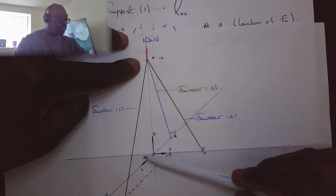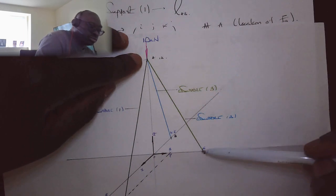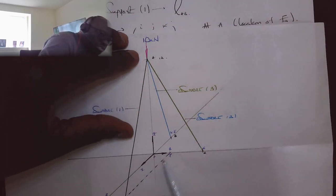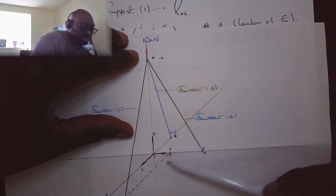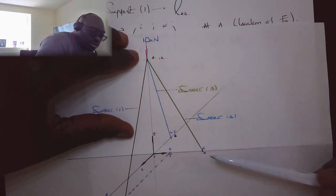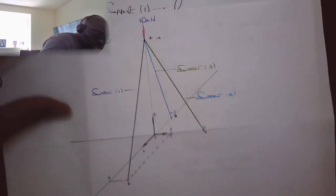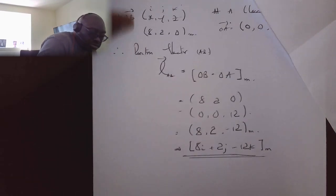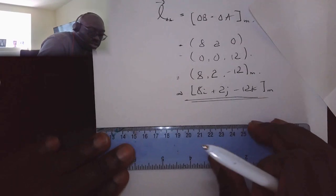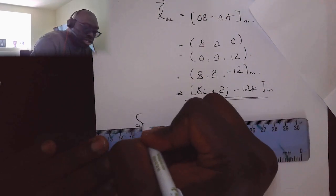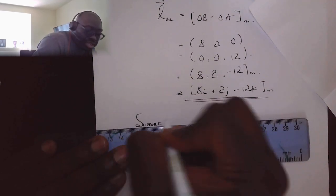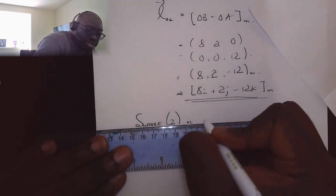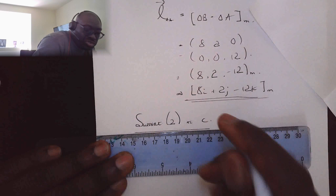So let's look at support two. At OC, so let's call that OC. So the position is zero, five, and zero. At A, so let's call that OA, the position as we did is zero, zero, twelve.